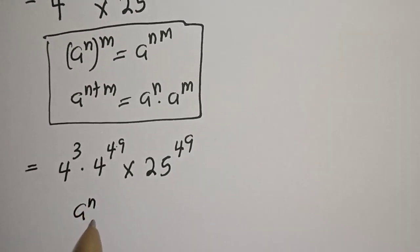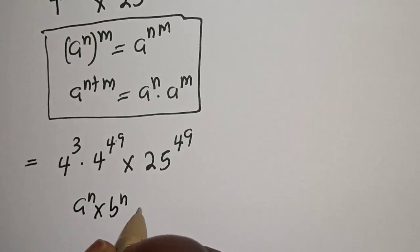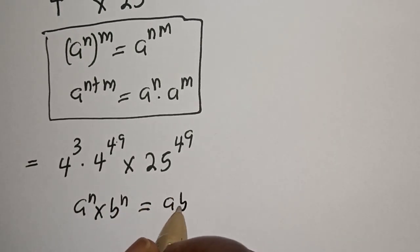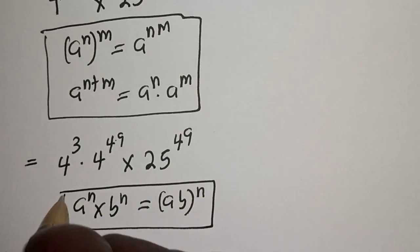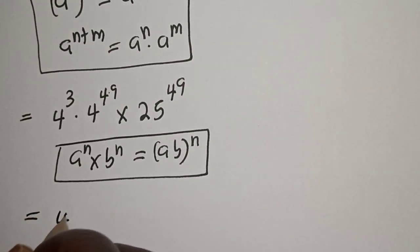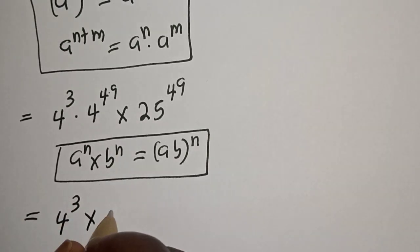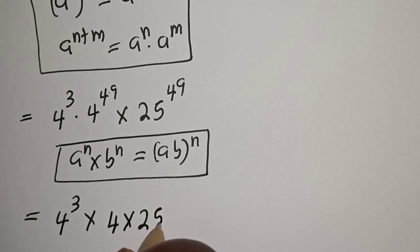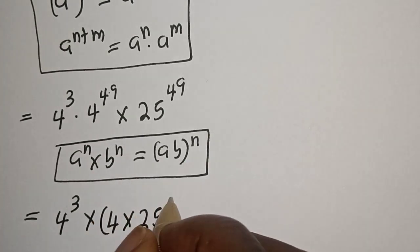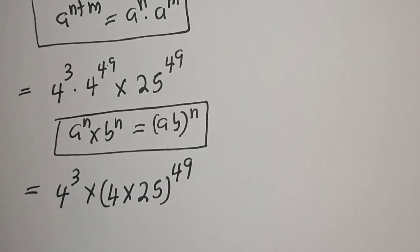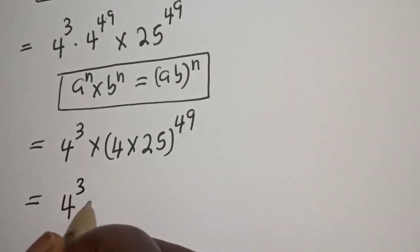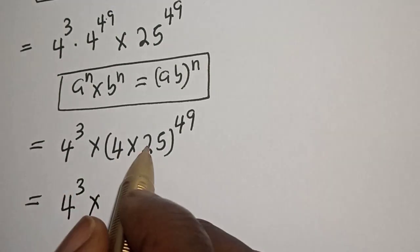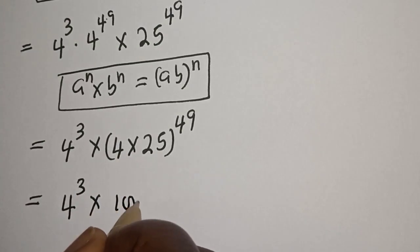Also, if you have a raised to power n multiplied by b raised to power n, that equals (a×b) raised to power n. So this becomes 4 raised to power 3 multiplied by (4 times 25) raised to power 49, and 4 times 25 is 100 raised to power 49.